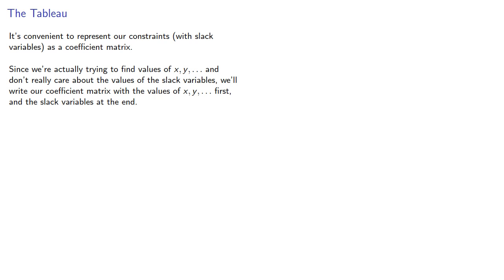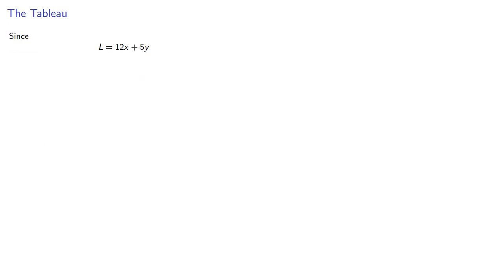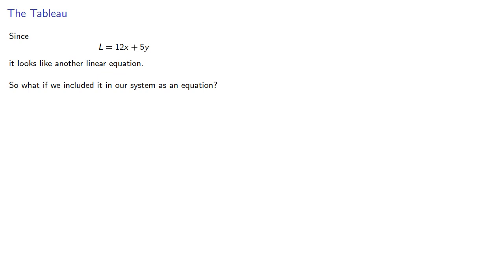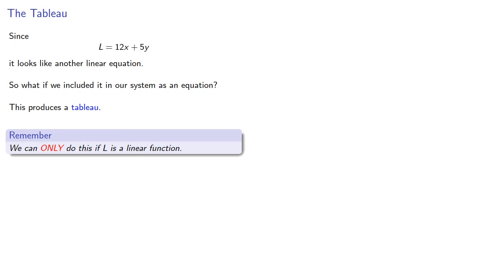But this matrix won't include our objective function — or could it? Since l equals 12x plus 5y, it looks like another linear equation. So what if we included it in our system as an equation? This produces our tableau, and it's important to remember we can only do this if l is a linear function.